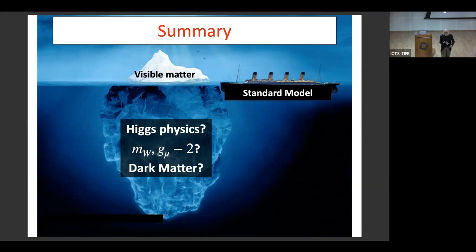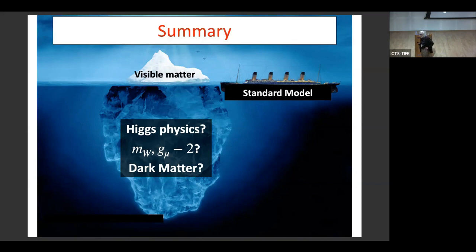Question: If the scale of supersymmetry is high as the LHC seems to indicate, how do we reconcile this with the requirement of naturalness? Answer: It's certainly true that this would mean supersymmetry by itself doesn't completely resolve the issue of naturalness. But it's still a hell of a lot better having supersymmetry at 1 TeV or 10 TeV than having no supersymmetry at all. Maybe that's telling us it's only part of the answer. I still think naturalness provides a strong motivation for supersymmetry.